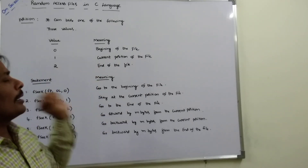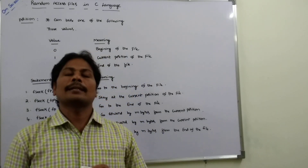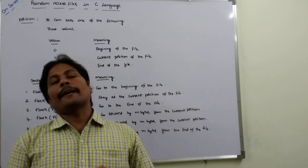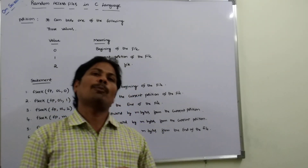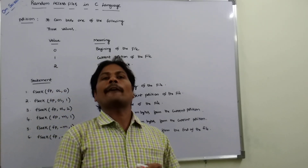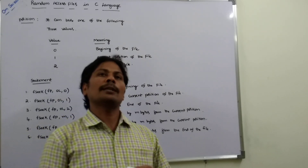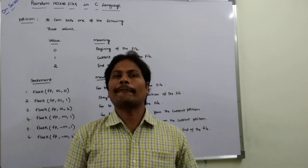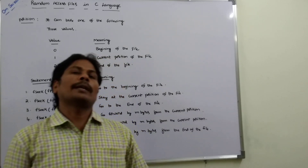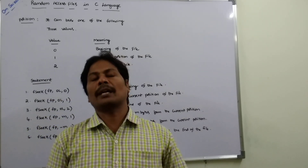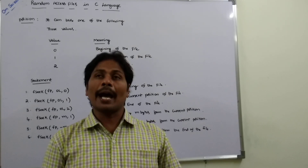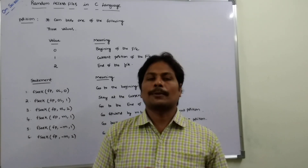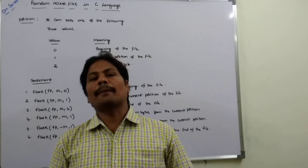This is the description about Random Access Files. It contains three functions: ftell function tells about the current position of the file pointer; rewind function resets the file pointer position to the beginning of the file; fseek function moves the file pointer position from the current position to any desired position in the given file. In random access files, we can directly go to a particular record and access that record.